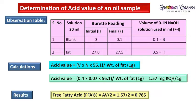Now for the results: if we want to calculate the percentage of free fatty acids from the acid value, the formula is: % Free Fatty Acid = Acid Value ÷ 2. This free fatty acid percentage is reported with respect to oleic acid. Substituting the acid value of 1.57: % FFA = 1.57 ÷ 2 = 0.785%. This is how one calculates the percentage of free fatty acids.